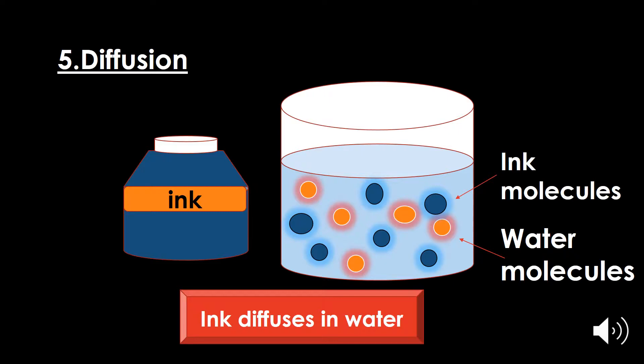Here, ink and water both are liquids. Now pour some ink into water. You can notice that they mix easily to form a liquid mixture. Here, blue circles represent the ink molecules and the orange circles represent the water molecules.